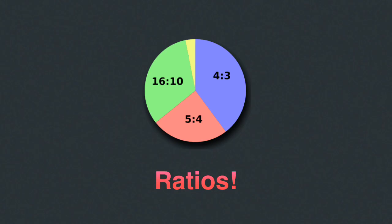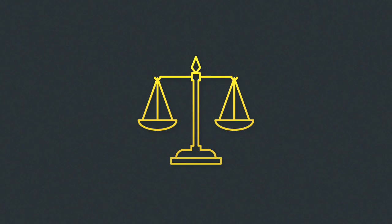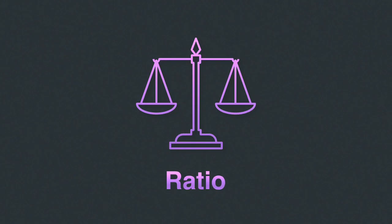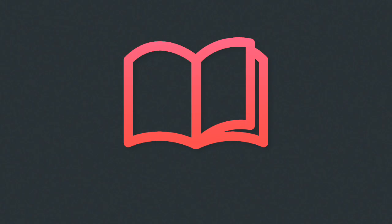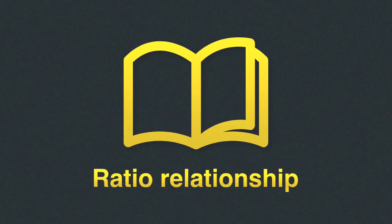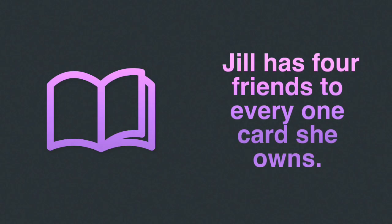So what more do we know about ratios now? Ratios compare two different quantities and, like a scale, we have numbers of quantities on both sides — four to five is a ratio, two quantities being compared. But on the other hand, we have something called a ratio relationship, which uses words to describe what those quantities are. The ratio four to one can be described as 'Jill has four friends to every one card she owns.' There's a relationship here, and it's a ratio being described using words — thus, it's a ratio relationship.